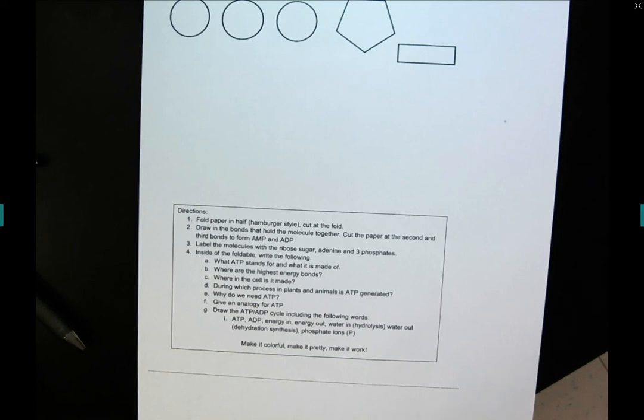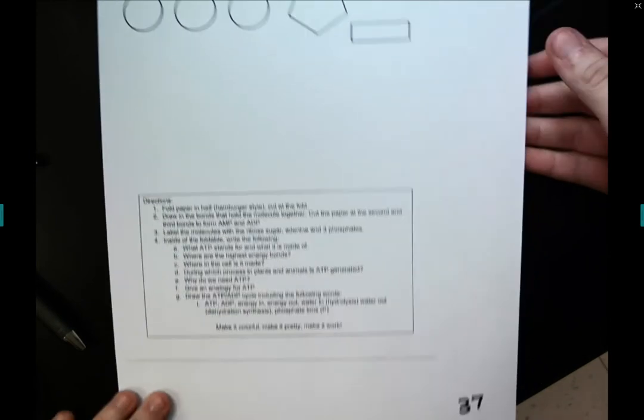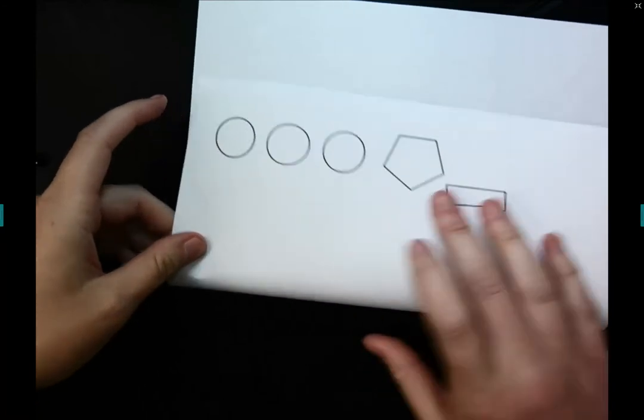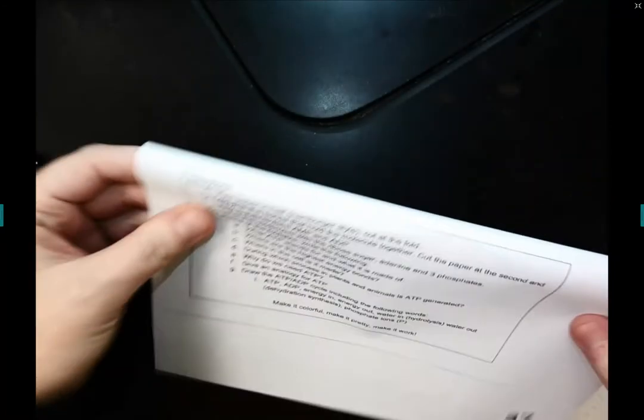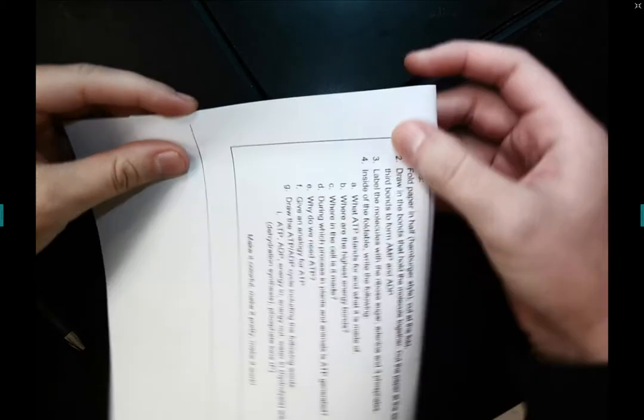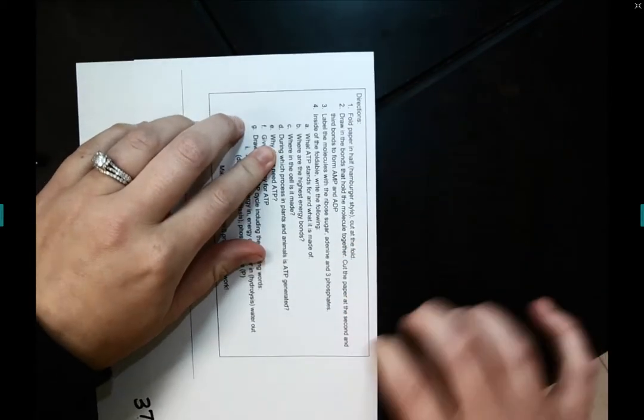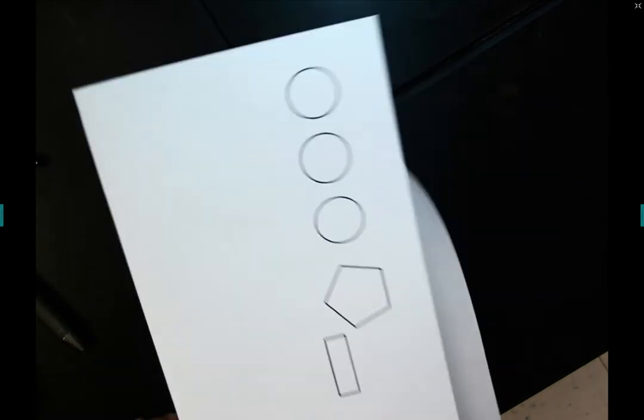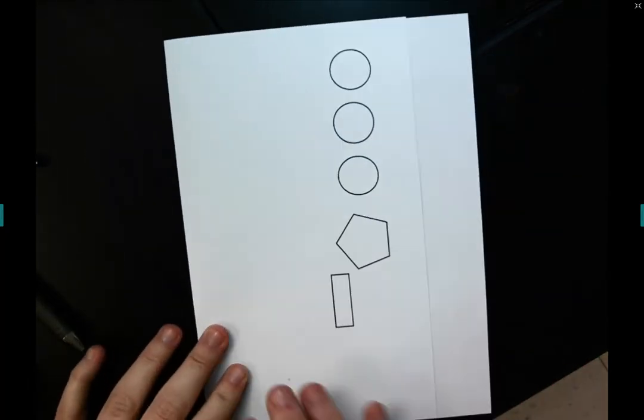Hey there, so I'm going to show you how to put together and fill in our ATP foldable. So what I'm going to do is start by folding this over. I don't want to fold it completely in half. Basically what I want to do is fold it so that the directions end up on one side and then our ATP molecule is on the other side.